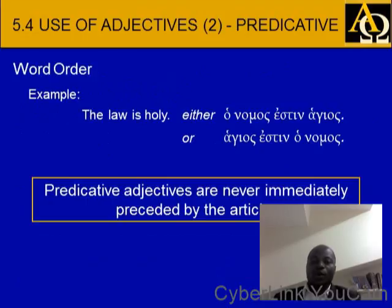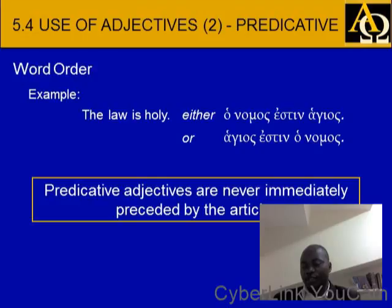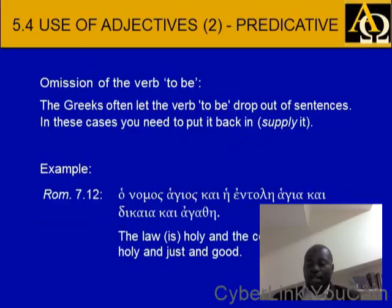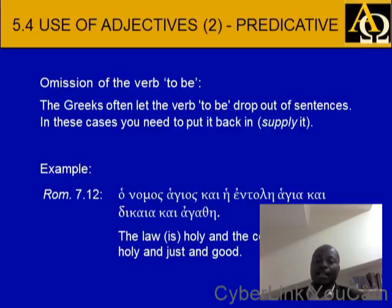Word order: the law is holy — ho nomos estin hagios, or hagios estin ho nomos. Predicative adjectives are never immediately preceded by the article. Regarding omission of the verb to be: the Greeks often let the verb to be drop out of sentences. In this case you need to put it back in — as we say, to supply it.